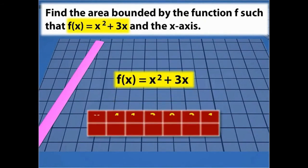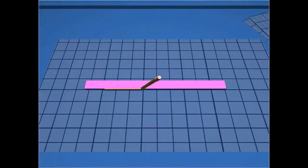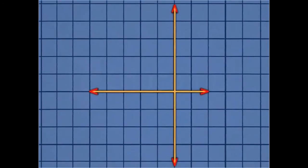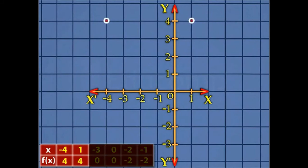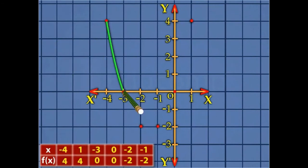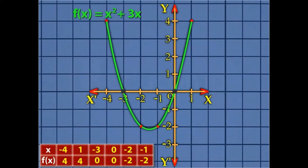Now select some values of x and find the corresponding values of f(x). Draw the x and y-axis and mark the positive and negative values on both axes using a suitable scale. Mark the obtained points on the graph and join them. The parabola cuts the x-axis at the points where y = 0. We can see that the area enclosed by the parabola and the x-axis is below the x-axis and it lies in the closed interval [-3, 0].